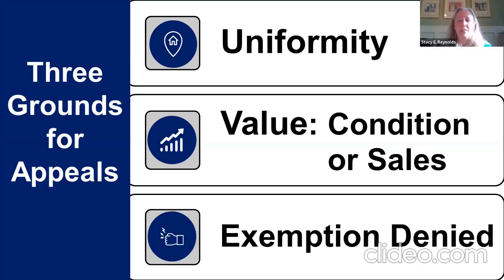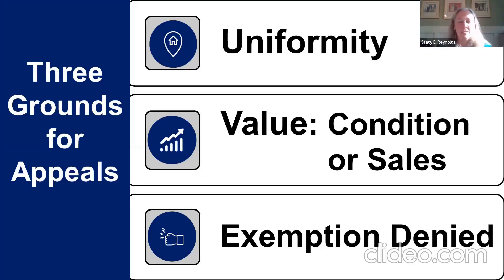The third grounds for appeal is exemption denied — they applied for the homestead exemption before the April 3rd deadline and did not get it. If they got denied or haven't been approved yet, it's worth going ahead and appealing. One thing different this year is you can't appeal all three online — you have to do one of them as a paper appeal. They've made it so you can't even do separate appeals online for uniformity/value and then a second one for exemption denied. Which grounds they're checking determines which online vs. paper approach to use.